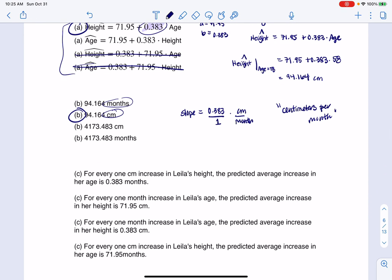So if I look at this, first of all, I'm going to rule out this option and this option, because they have 71.95 in there. At least these ones are talking about 0.383. And just off of that, I can find the answer. Look at 0.383 months or 0.383 centimeters. Well, we know it's 0.383 centimeters. And you can see it. For every one month increase in Layla's age, here's her predicted average increase in her height, is 0.383 centimeters. And it's an increase because the slope is positive.